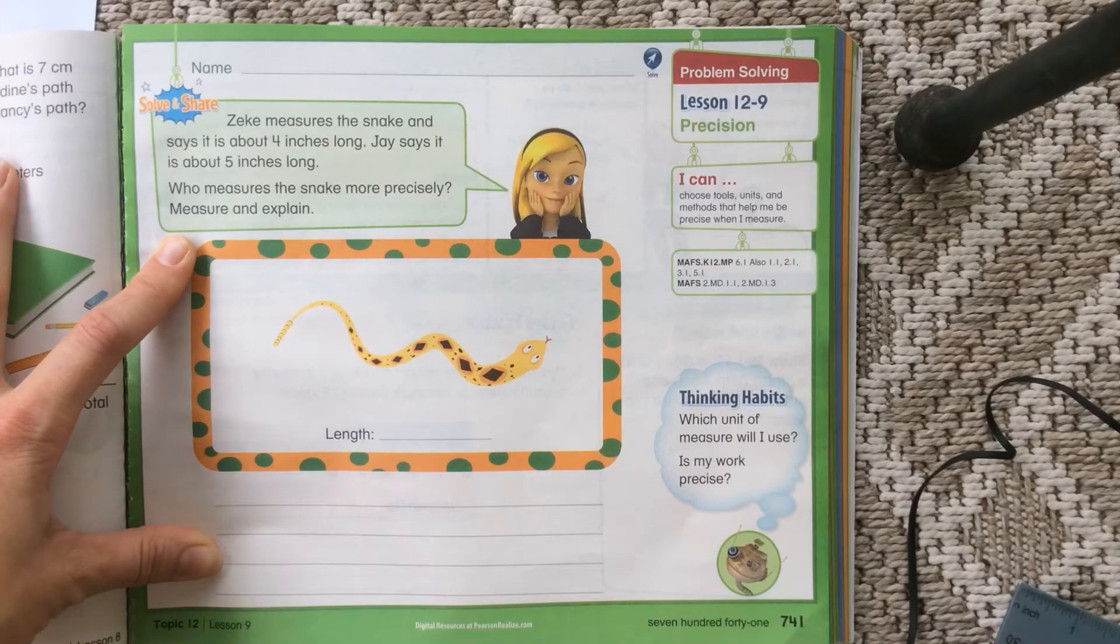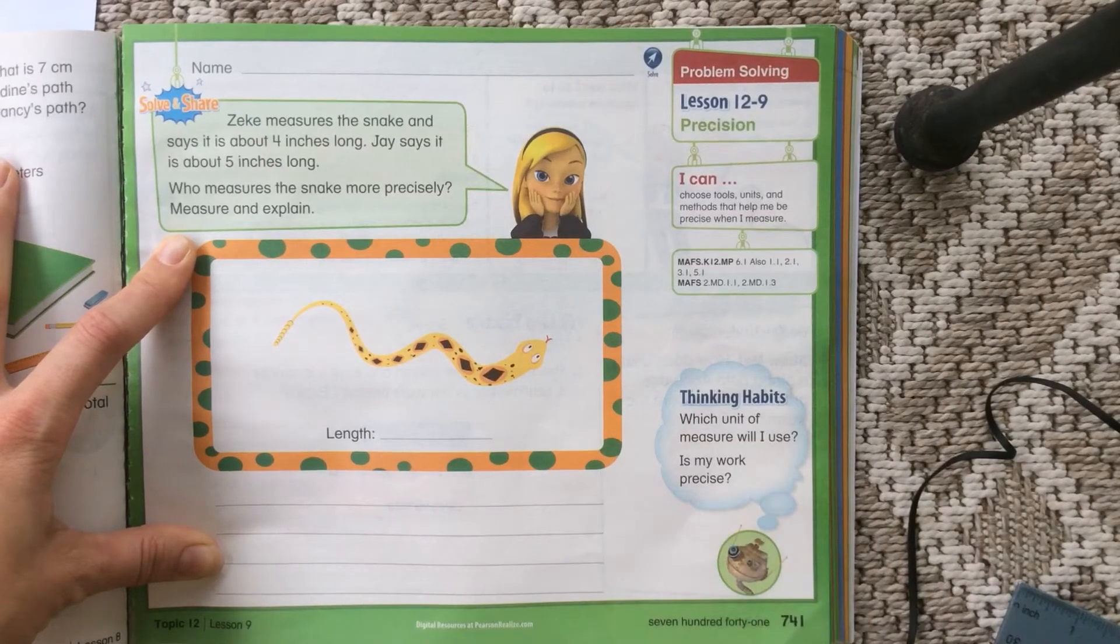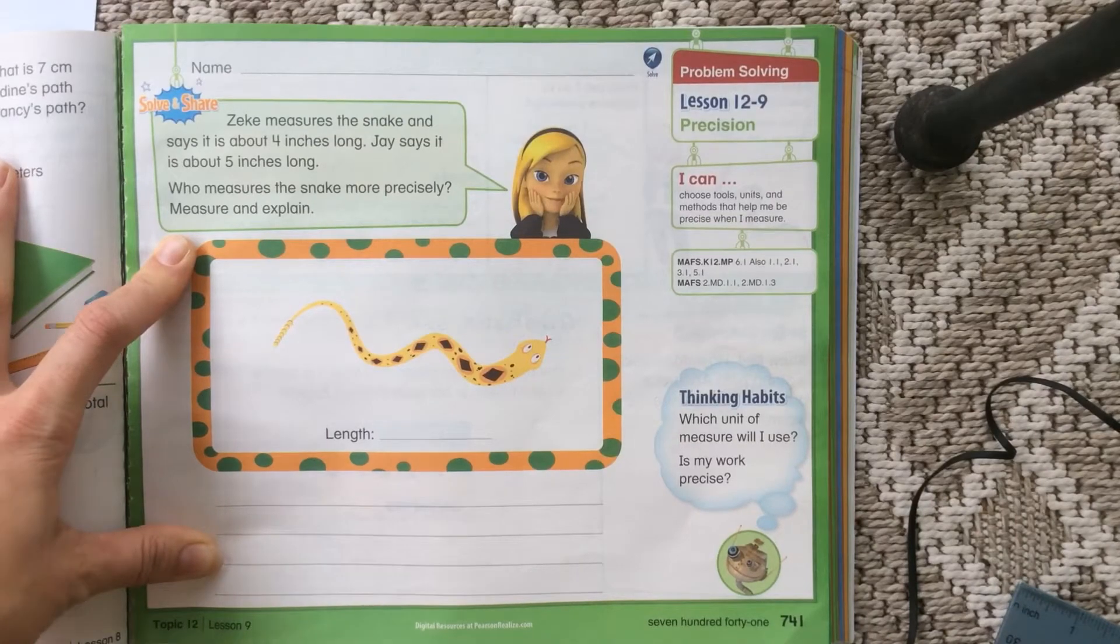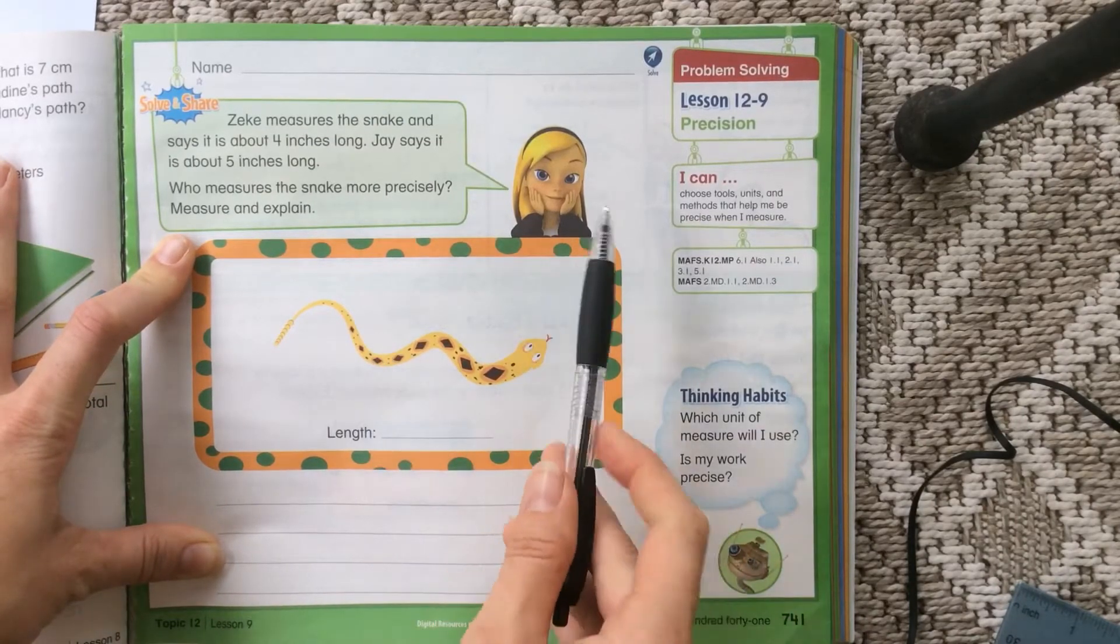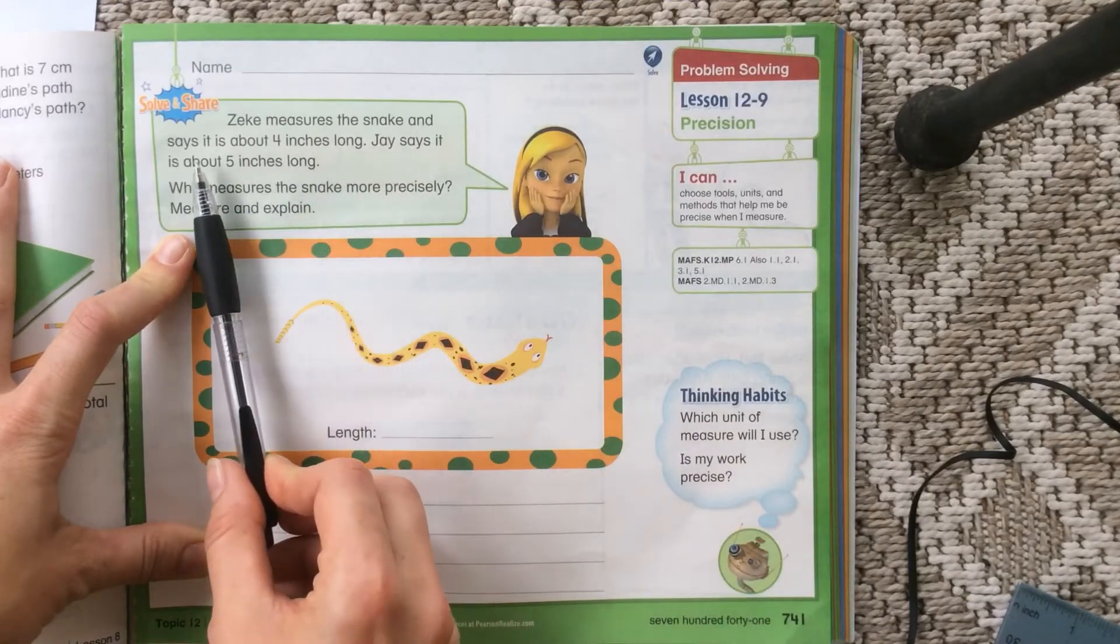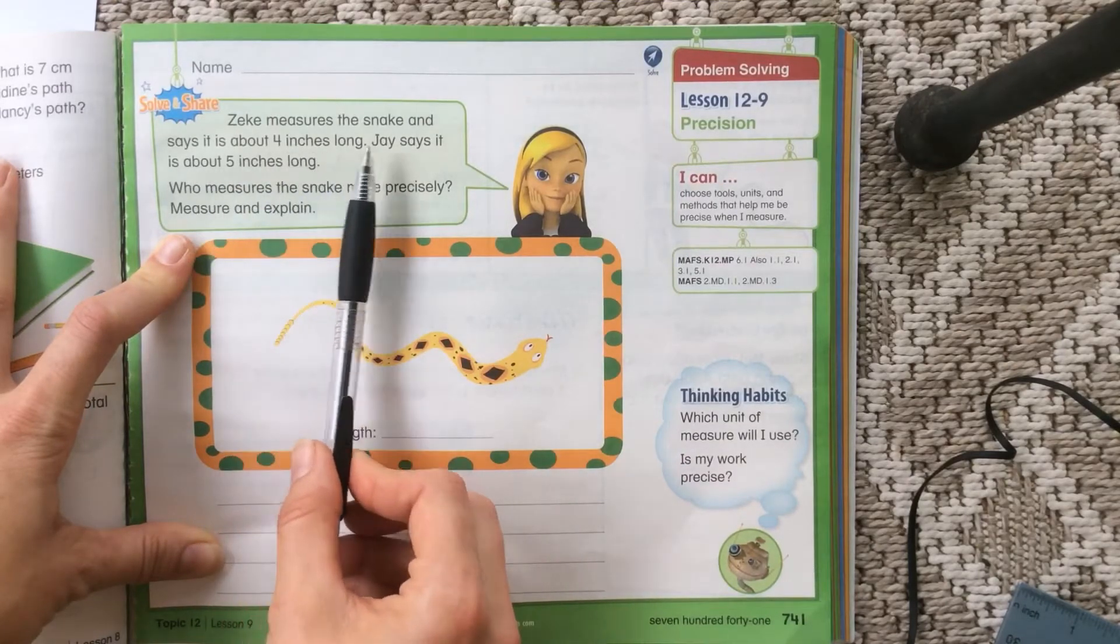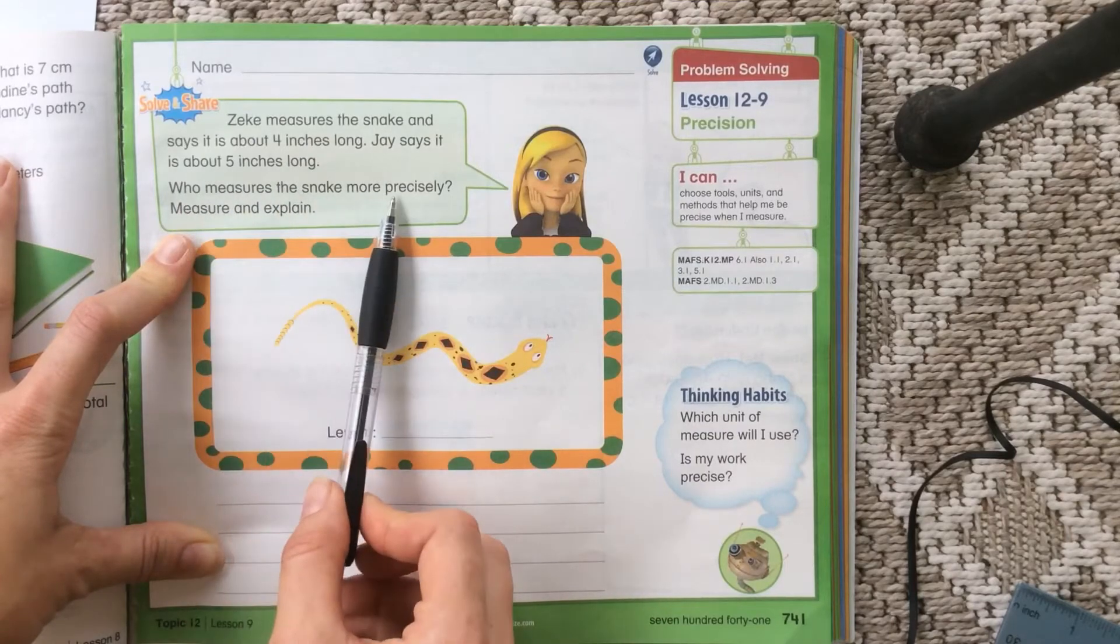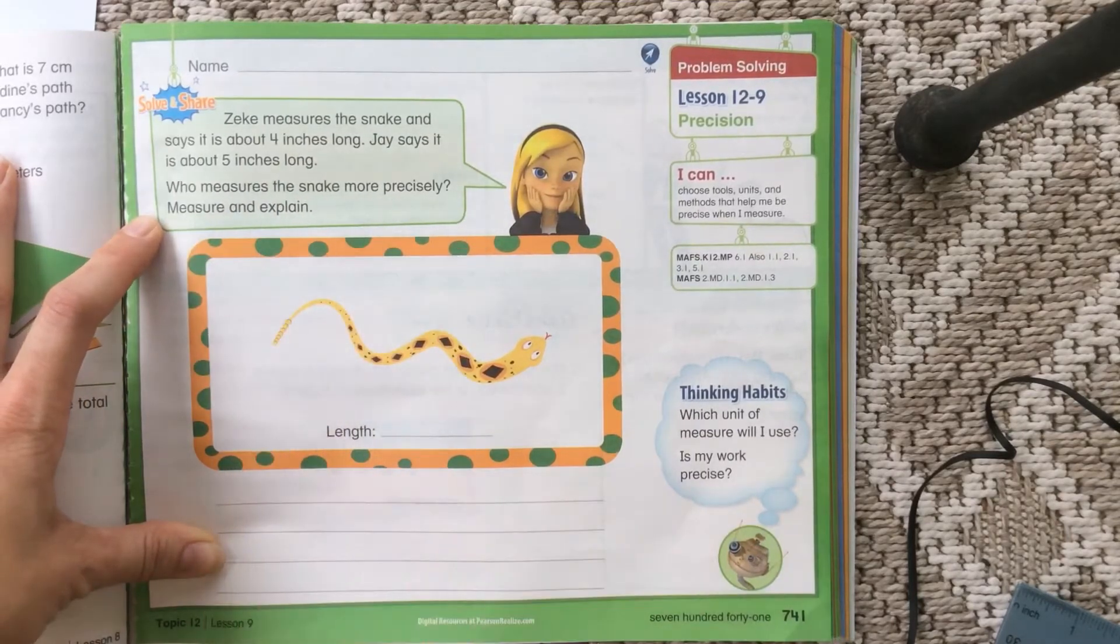Alright, now that you have done page 741 through 743, I would like to check your work with you. We have the girl is saying that Zeke measures the snake and he says it's about 4 inches long. And Jay says it's about 5 inches long. Who measures the snake more precisely? Measure and explain.